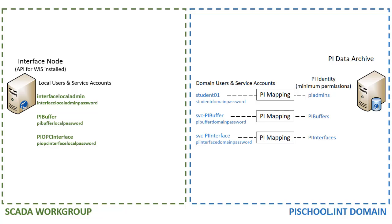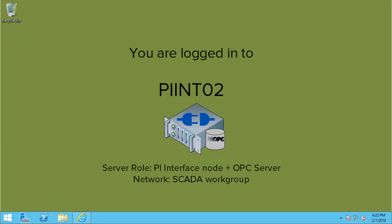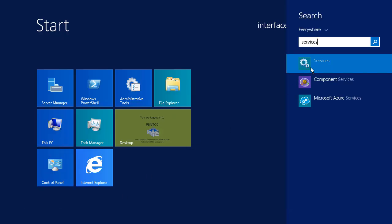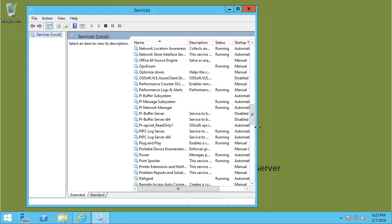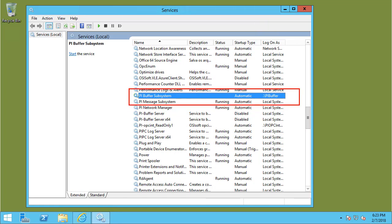On our workgroup interface node PI02, we are currently logged in as Interface Local Admin using the password of that local account. The interface is running as a local account PI OPC Interface, and the buffer is running as a local account PI Buffer. We had to use local passwords for the workgroup node to set up these services. We've already set up the interface and PI Buffer, but have disabled the trust in the PI Data Archive that was used during that setup. Note that the interface node does have API for Windows Integrated Security installed, so we will be able to use a mapping for API connections such as the PI OPC Interface. In Services, you can see that PI Buffer Subsystem is set up using local account PI Buffer, and OPC Interface is set up using local account PI OPC Interface. However, neither of the two services are currently running.